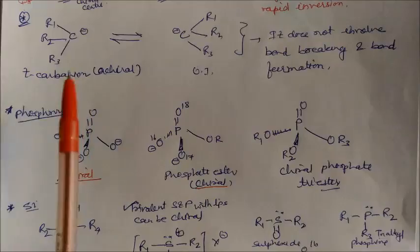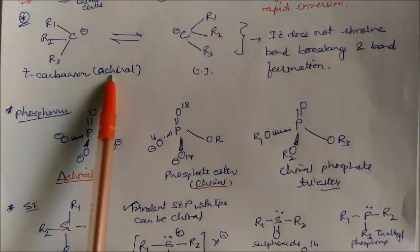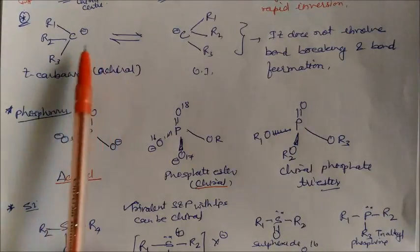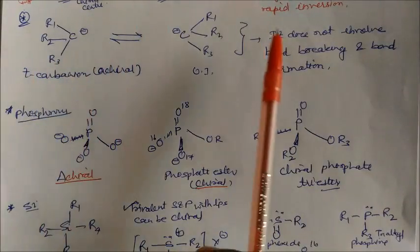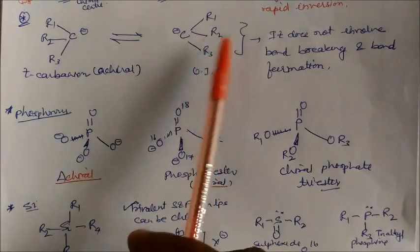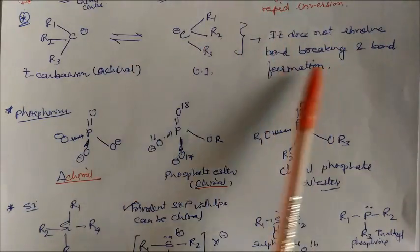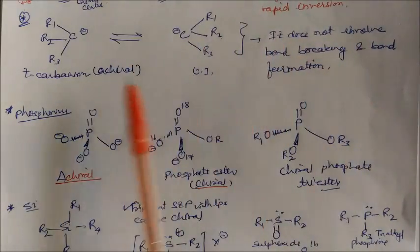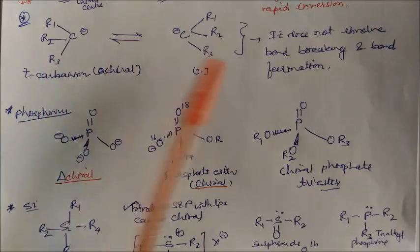Tertiary carbanion is also achiral. Again it undergoes rapid inversion — it does not require bond breaking or bond formation. So this is also optically inactive and achiral.